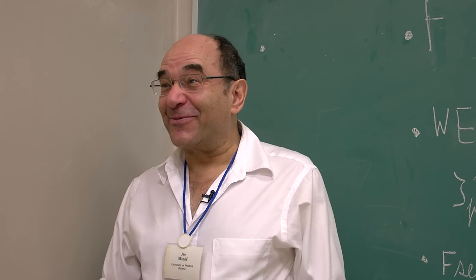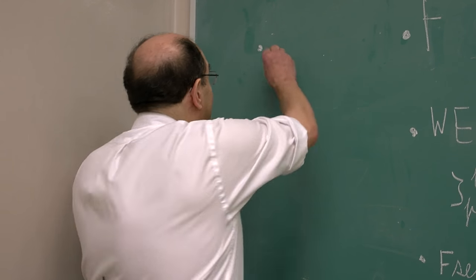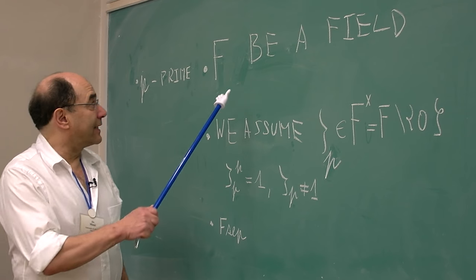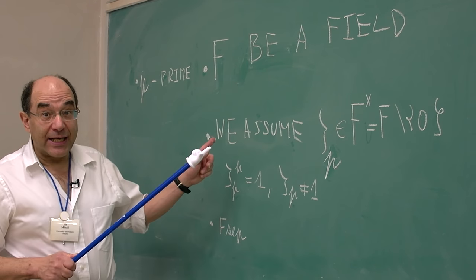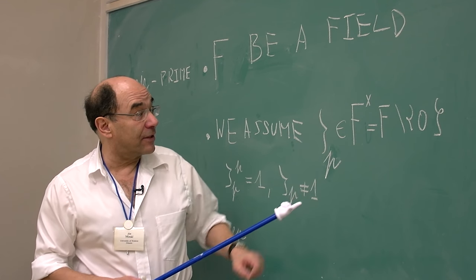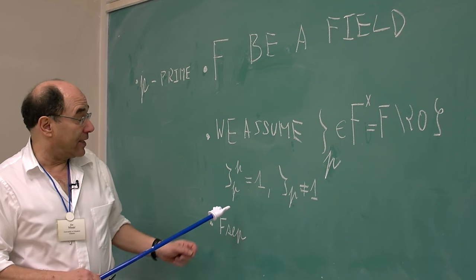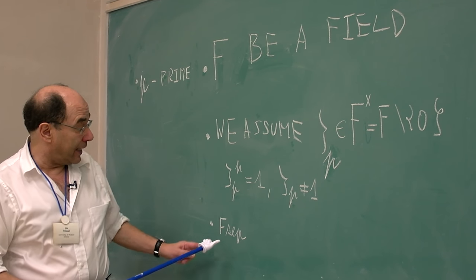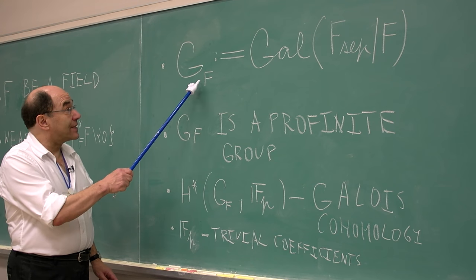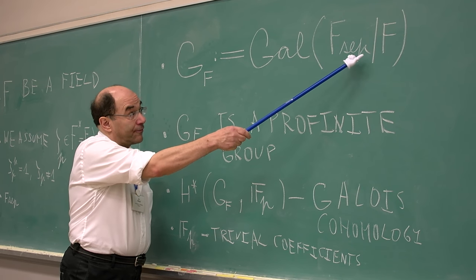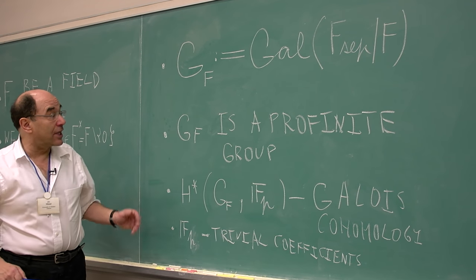Thank you, Marina. This was an excellent question. Let p be a prime number. Let F be a field. We assume that zeta sub p is in the multiplicative subgroup of field, where zeta p is a primitive p-th root of unity, and F sep is separable closure of F. Let G sub F be Galois group of separable closure over F, which is absolute Galois group.